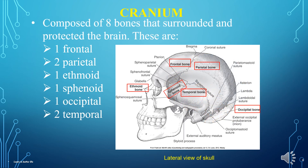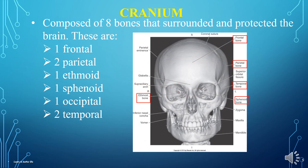This is the lateral view of the skull. You can see the frontal, ethmoid, sphenoid, occipital, and temporal bones in the red boxes. This is the frontal view of the skull. You can see the frontal, ethmoid, parietal, sphenoid, and temporal bones in the red boxes.